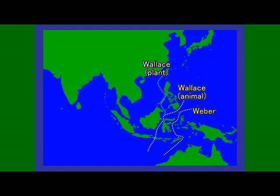These maps have three dotted lines. These lines indicate distribution boundaries. From west to east, each shows the Wallace plant line, the Wallace animal line, and the Weber line. Please take particular note of the relationship between these lines and the distribution pattern of each species.